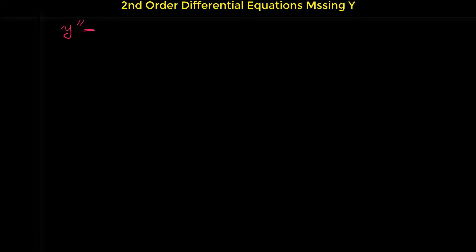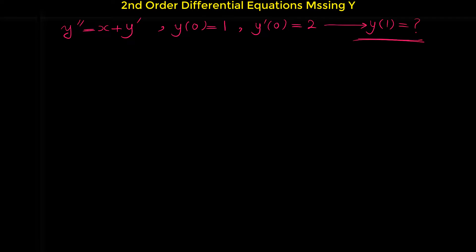The first differential equation is y double prime equals x plus y prime. We know that the value of y at the point 0 is 1, y prime at point 0 is 2, and we are asked to find the value of the function y at the point 1. For finding that value, first we have to find the function, then plug in 1.